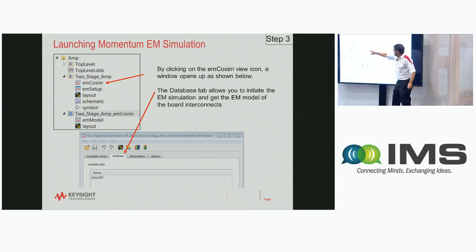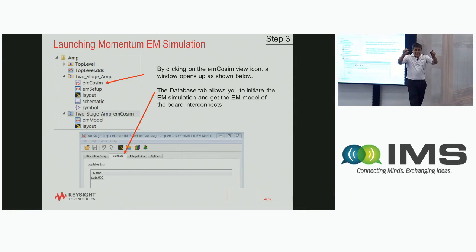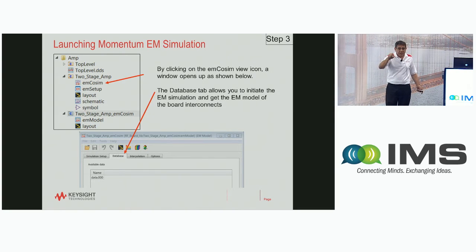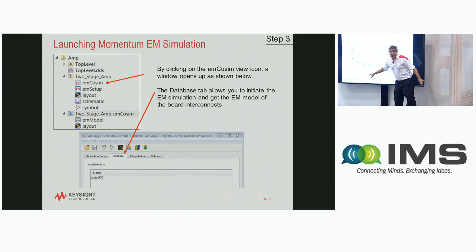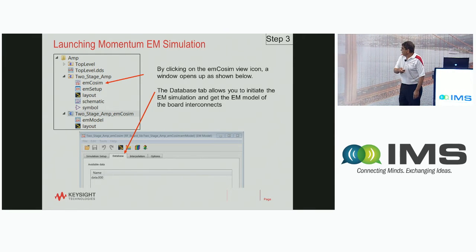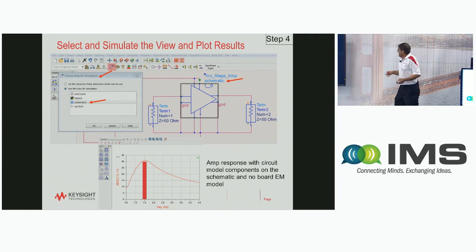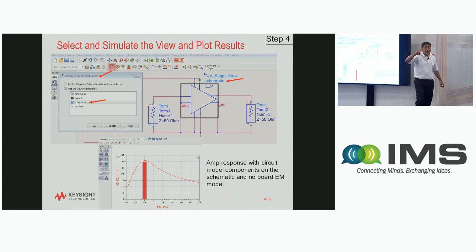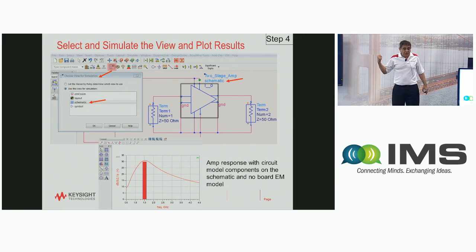The next step is to simulate. You open the EM co-sim cell and you'll see the database window — essentially launching Momentum. Once you launch Momentum, it simulates the EM and saves the results in the database, so the EM results for the board are now stored. Now the fun part: from the top level you can change views — you can simulate the schematic, the layout, or the EM, which I just did.